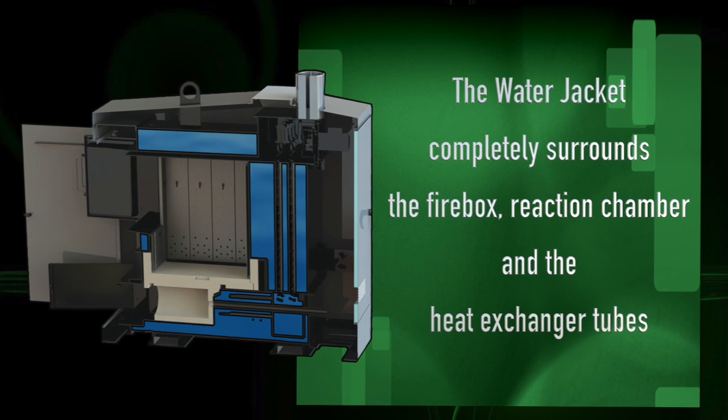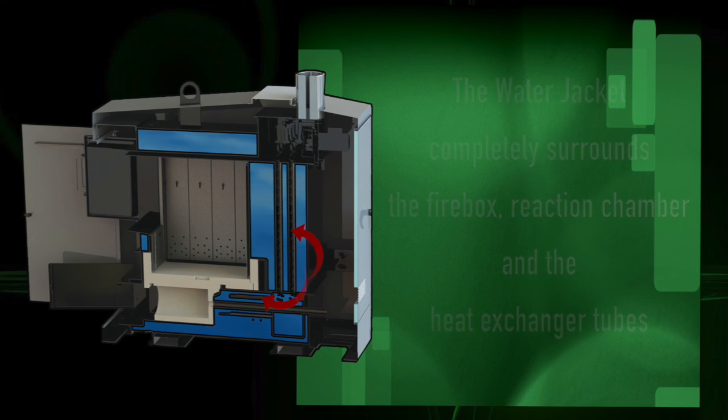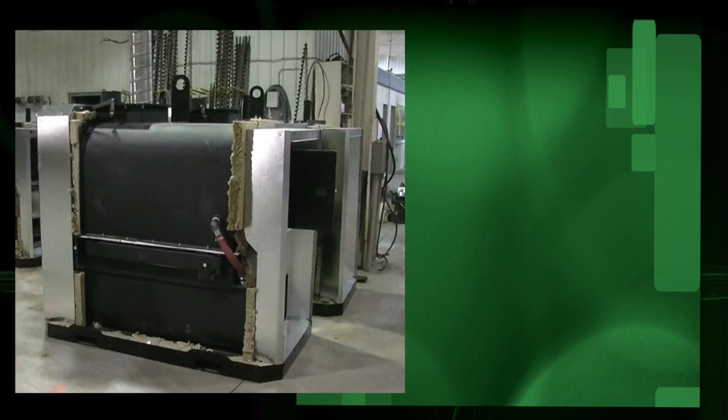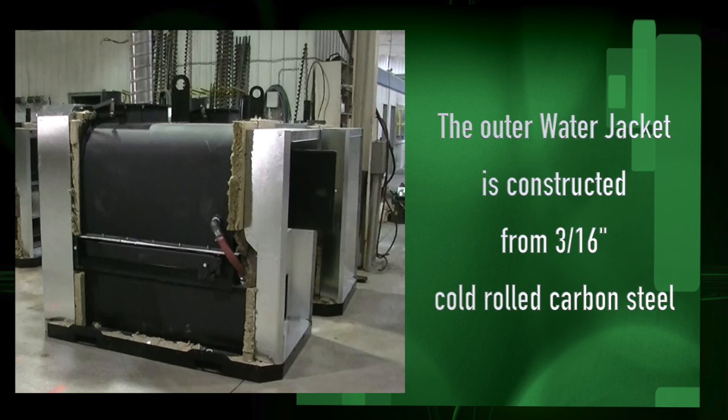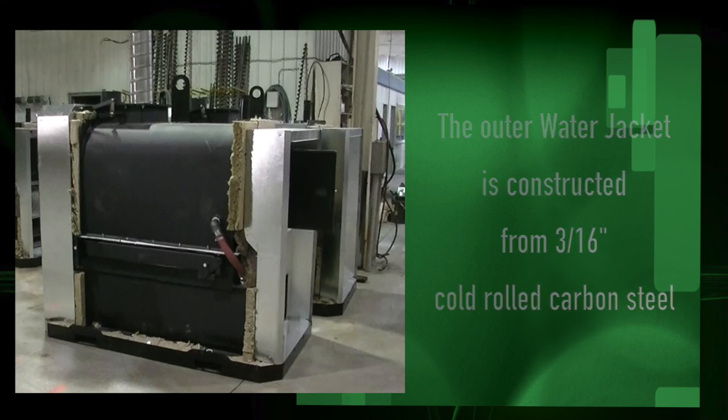The water jacket completely surrounds the fire box, reaction chamber and heat exchanger tubes. The inner wall of the water jacket and fire chamber are constructed of quarter inch cold rolled carbon steel and the outer water jacket is 3/16th cold rolled carbon steel.